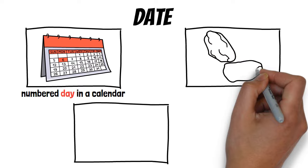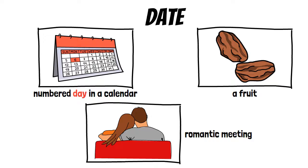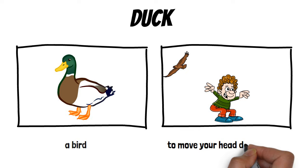Date: the first meaning is a numbered day in the calendar, the second is a fruit, and the third is a romantic meeting. Duck: the first meaning is a bird, and the second means to move your head down quickly.